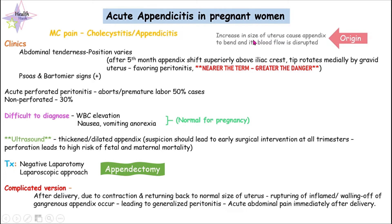If we speak about why acute appendicitis in pregnant women occurs, it is because due to the pregnancy the uterus size increases, which eventually results in bending of the appendix. This causes a disruption of the appendix blood flow, and this is where the origin of acute appendicitis in pregnant women occurs.